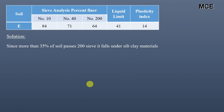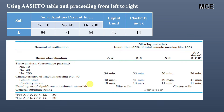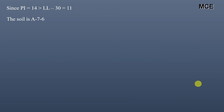For soil E, more than 35% passes sieve number 200, so it falls under silt-clay materials. The percentage passing sieve number 10 is 84, sieve number 40 is 71, and sieve number 200 is 64. The liquid limit and plasticity index are 41 and 14 respectively. Using the AASHTO table, the minimum liquid limit for A-7 is 41 and minimum plasticity index is 11, so our soil is A-7. To determine A-7-5 or A-7-6: the plasticity index of 14 is less than liquid limit minus 30 (which equals 11), so this soil is A-7-6.